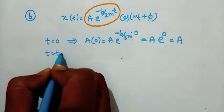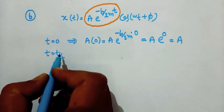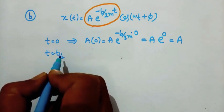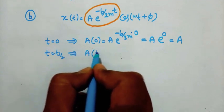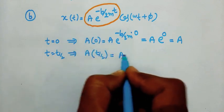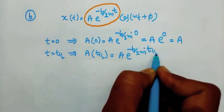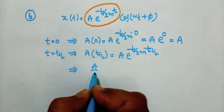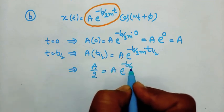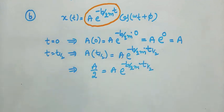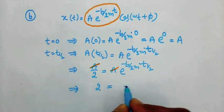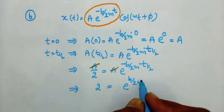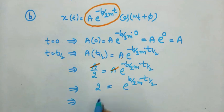Taking T equals T_off, where T_off means the time taken for amplitude to drop to half of its initial value. At T equals T_off, amplitude equals A times e to the power of minus B by 2M into T_off. After cancelling A, we get 1/2 equals e to the power of minus B by 2M into T_off, which we can write as 2 equals e to the power of plus B by 2M into T_off. Taking log on both sides: log 2 equals B by 2M into T_off.